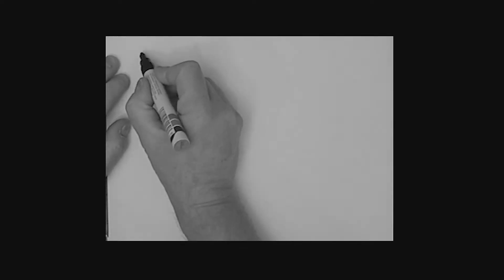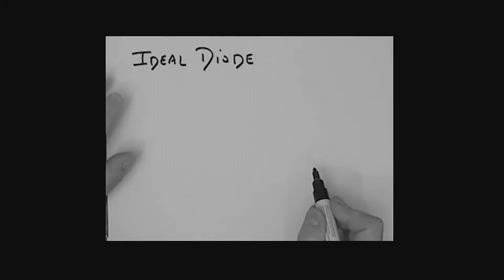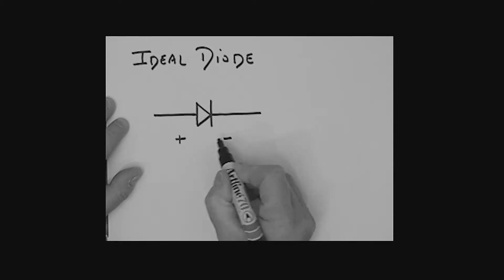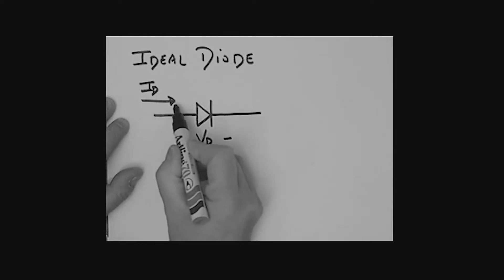We're going to start off with a discussion of the ideal diode. Let's draw a symbol first for this diode. The symbol looks like this. We're going to show the defined voltage direction and current direction associated with this diode. Plus minus, we have the voltage VD, the voltage across the diode, and the current through the diode is defined as ID in this direction.